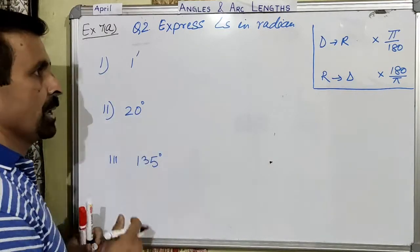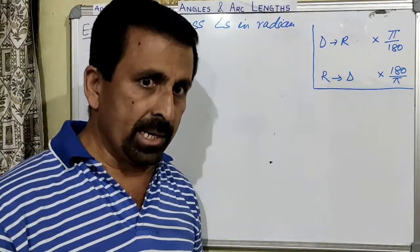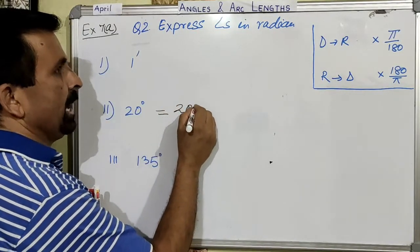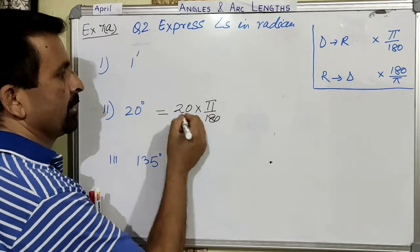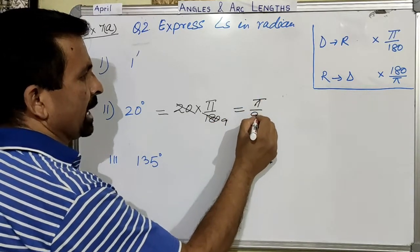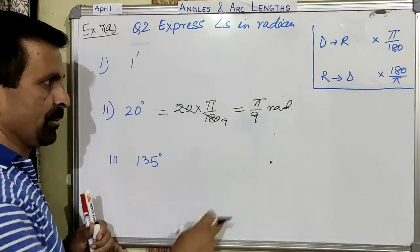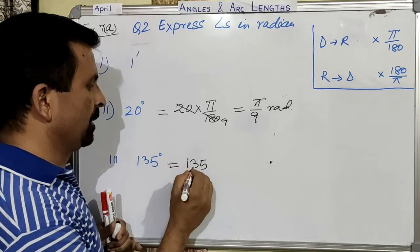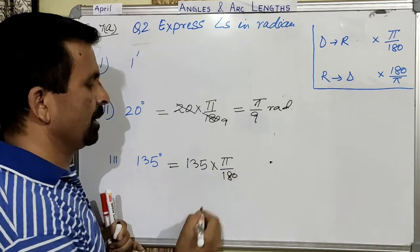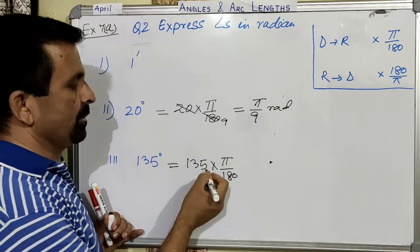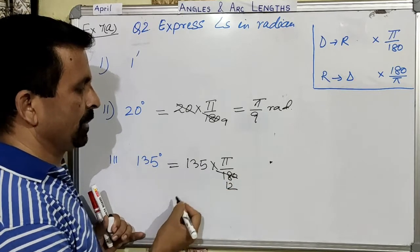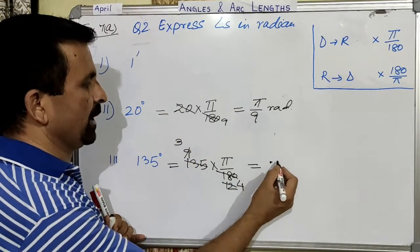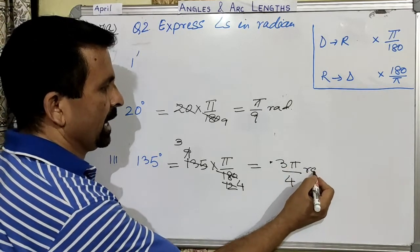First, I will convert 20 degrees into radian. When you have an angle in degree, converting into radian is straightforward — simply take 20 degrees and multiply by π/180. The answer is π/9 radian. You must write the unit radian; if you don't, half your marks will be deducted. Next, 135 degrees multiplied by π/180: simplifying gives 3π/4 radian.